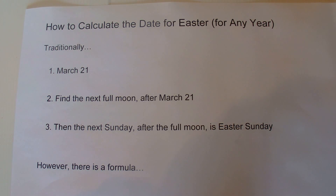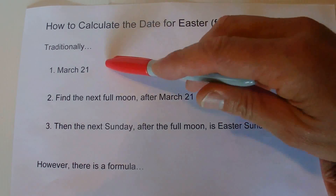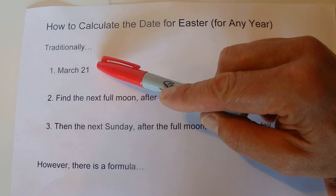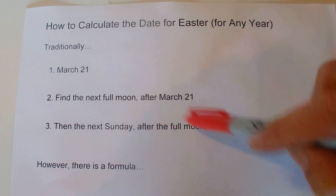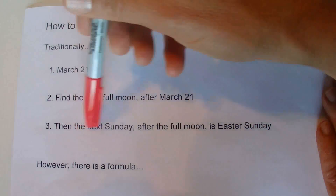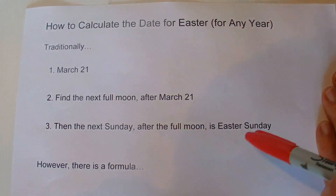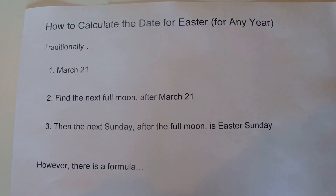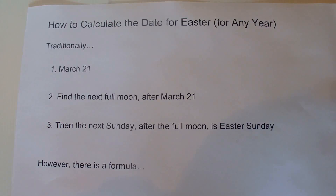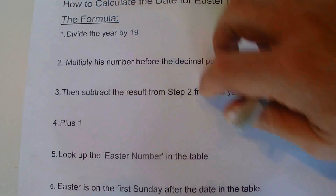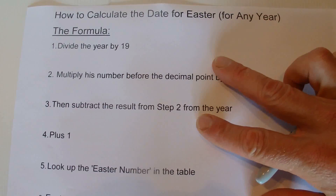That's for any year. The traditional way of working out Easter is you take the 21st of March, find the next full moon after the 21st of March, and then the following Sunday after the full moon is Easter Sunday. But if you don't know when the full moon is, there is a simple formula that is really based on that full moon that you can use.